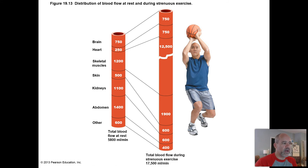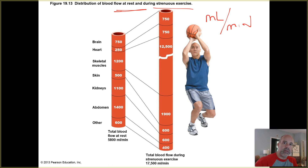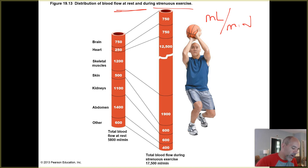Figure 19.13 in your textbook is a pretty interesting diagram comparing blood flow throughout your body at rest versus when you are exercising strenuously. Blood flow is given in milliliters per minute. On average in an adult, systemic blood flow is about 5,800 milliliters per minute at rest. If you're exercising vigorously, that increases about threefold to 17,500 milliliters per minute.